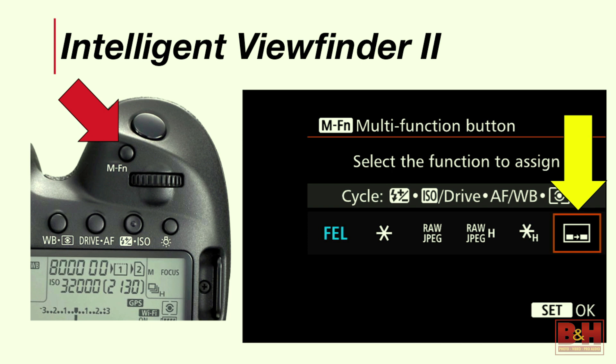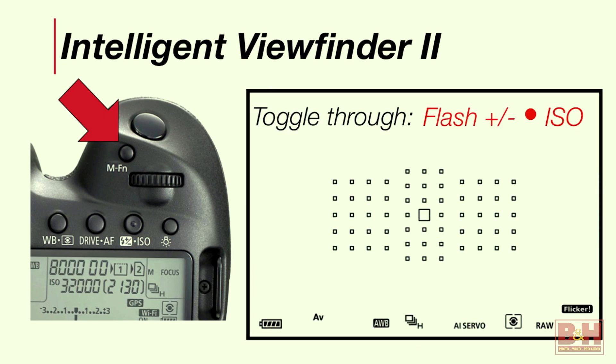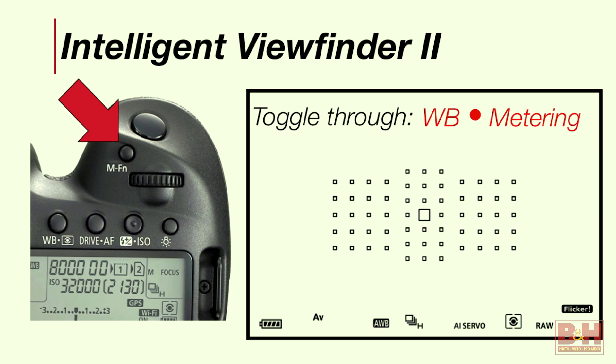Using the customized multifunction button, you can toggle through: changing flash compensation with one dial and ISO with the other; or the drive mode and AF mode (One Shot, Servo, AI Focus) with the two dials; or white balance setting and metering mode (evaluative, center-weighted, spot, partial). If you shoot outdoors and don't need to change white balance constantly, you simply don't need to display or use any of this — it's entirely up to you.